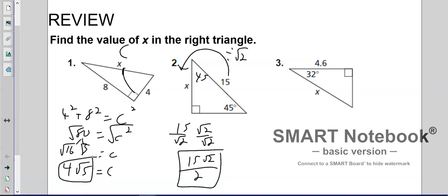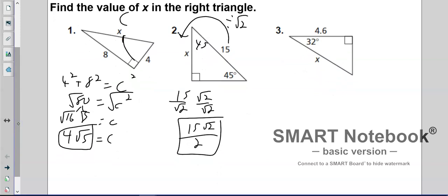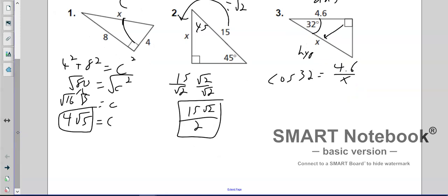Last but not least, we have an angle, a side, and another side missing. We're missing the hypotenuse. From this angle we have the adjacent, so that means we need to do CAH: cosine. Cosine of 32 degrees equals adjacent over hypotenuse. Remember, when the x is in the bottom we switch places, so x equals 4.6 divided by the cosine of 32. When we do that, that is going to give us approximately 5.4, which makes sense because it's bigger than 4.6.